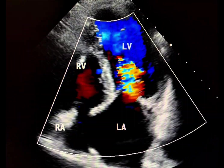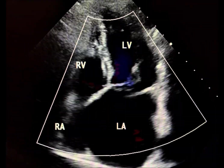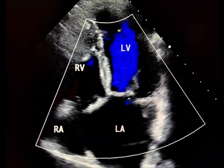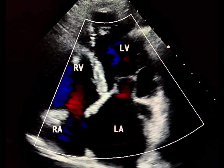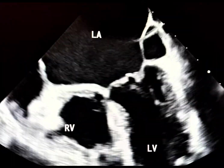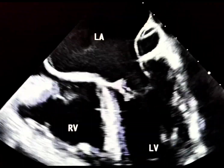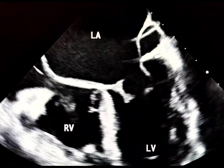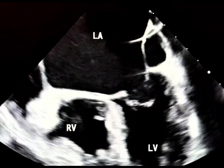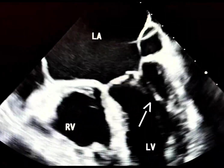The chordae tend to be thick, short, and fused, which restricts leaflet motion and can mimic rheumatic mitral valve stenosis. In this transesophageal echocardiographic (TEE) view, the thickened mitral valve with attachment of the chordae tendineae to a single papillary muscle is illustrated.